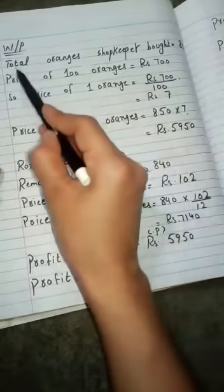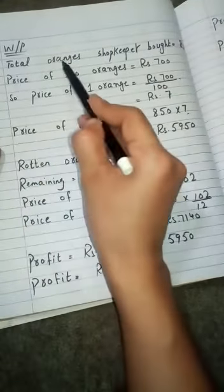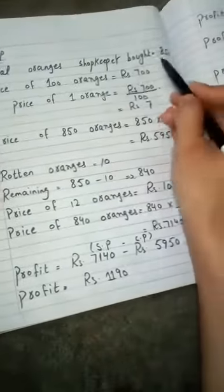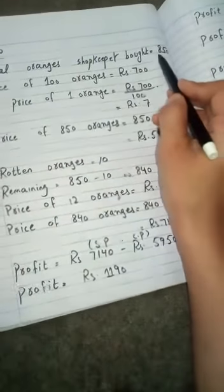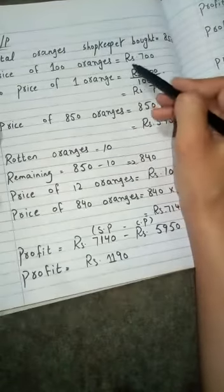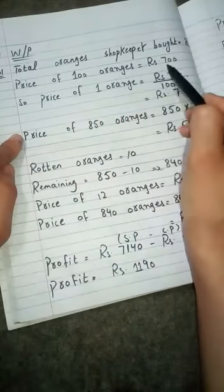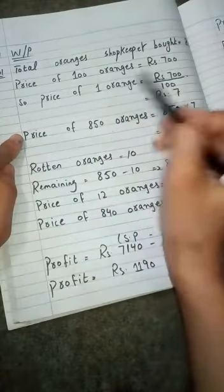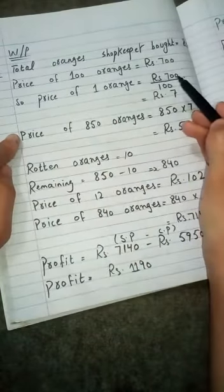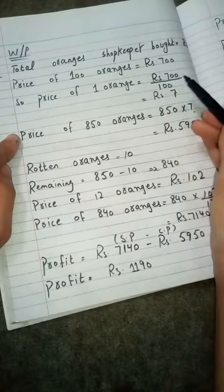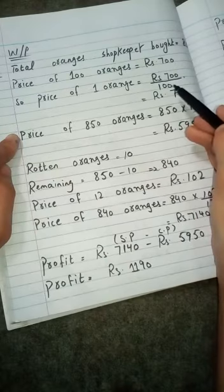If we are going to start the solution, the total oranges shopkeeper bought is equal to 850. First we need to find the price of 1 orange. If price of 100 oranges is 700, so price of 1 orange automatically 700 is divided by 100, that means price is divided by quantity.